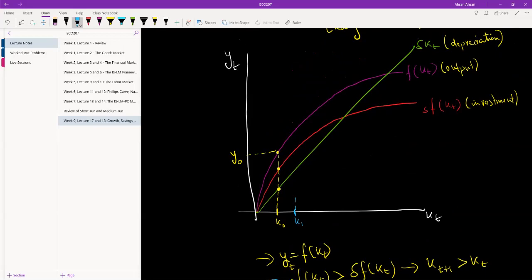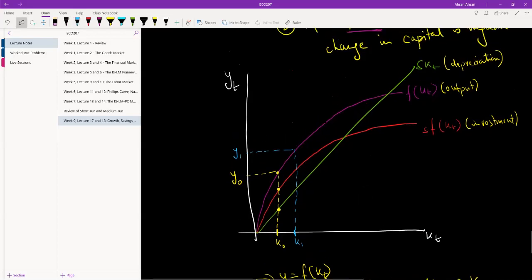Next period, we have more capital because of what we just established. So next year, what we are going to see is that we have more output. Because we have capital per worker, because workers have more machineries and equipments to work with, each worker is able to produce more. As a result, output per worker has gone up. Okay, but what else do we know?